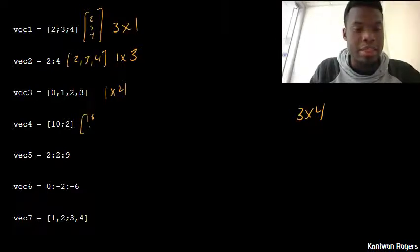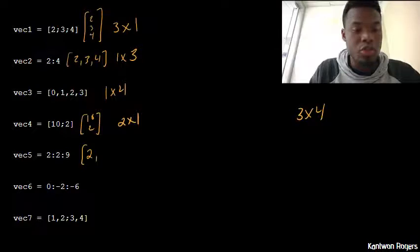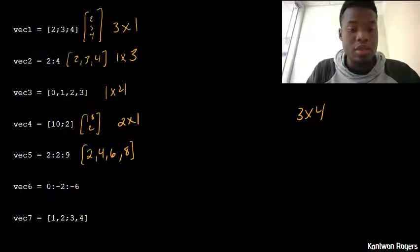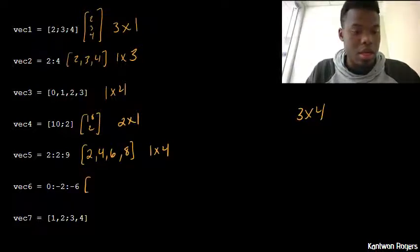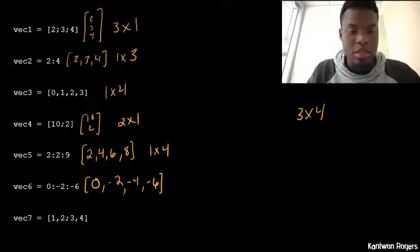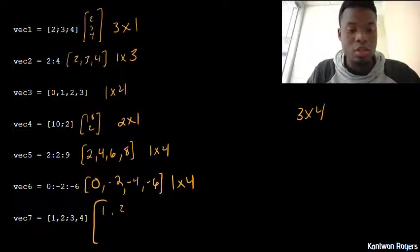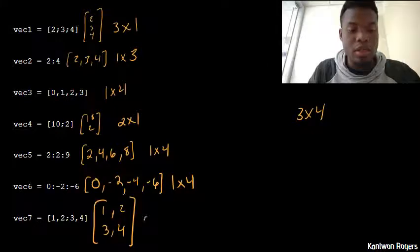This one is horizontally concatenating two, three, four — so it's a one by three. This other one is a one by four. We're vertically concatenating ten and two, so that's a two by one. This one starts at two with steps of two — two, four, six, eight — and stops there because the stopping number is inclusive in the colon operator, so this is a one by four. The next one starts at zero going in steps of negative two — giving negative two, negative four, negative six — also a one by four. And this last one is actually creating an array with first row one, two and second row three, four — so this is a two by two.